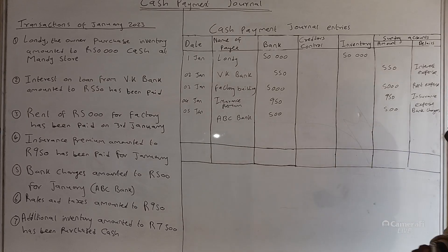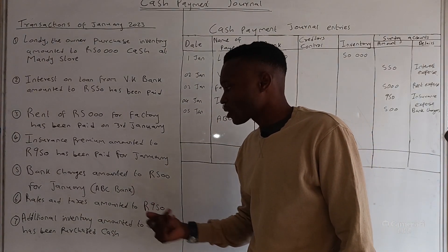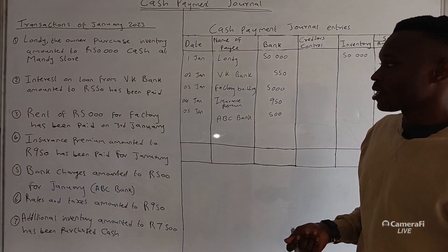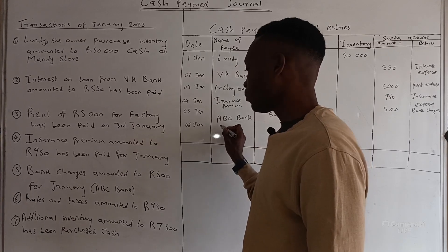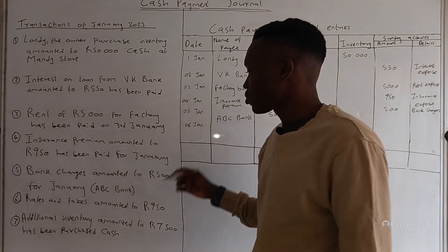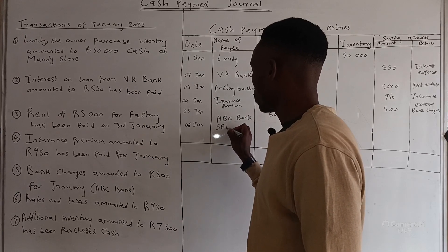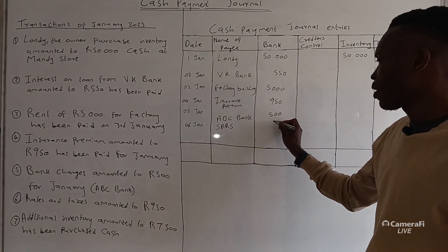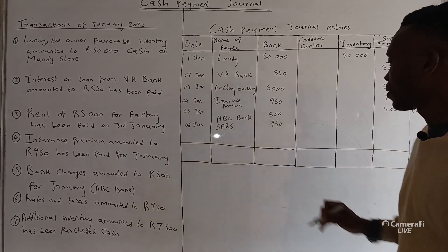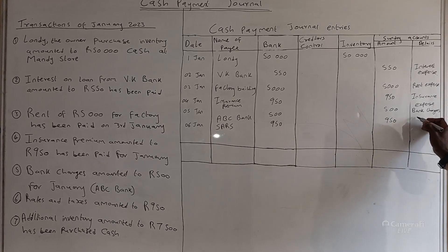Transaction six: rates and taxes amounting to 950 have been paid on 6 January. There is no specific company name for this one — you can note that rates and taxes are paid to SARS. The amount is 950 and it goes to the sundry account for 950 where we write rates and taxes.